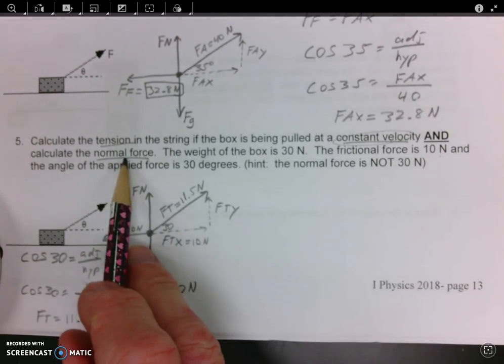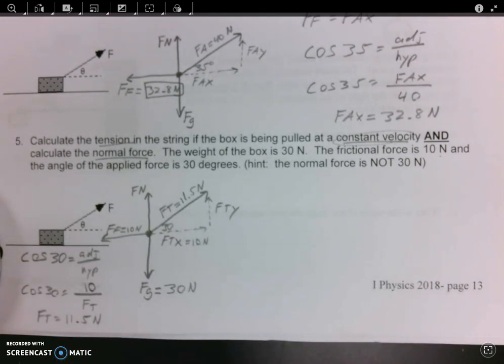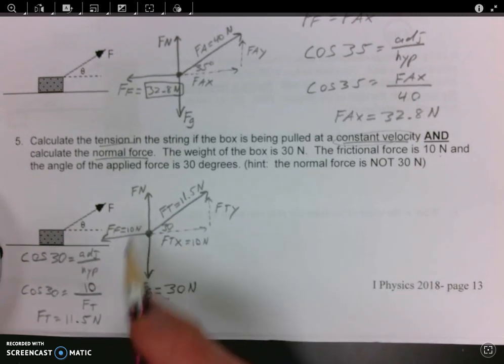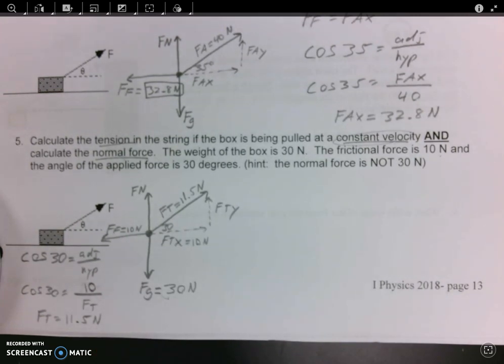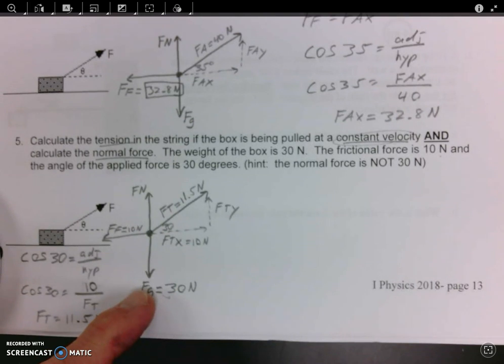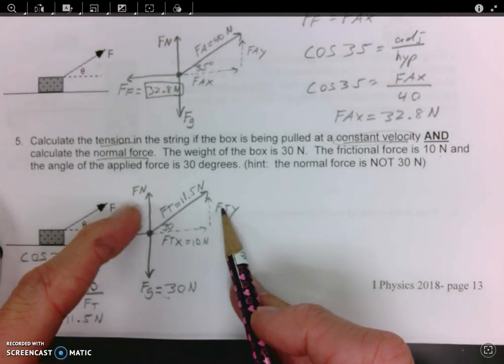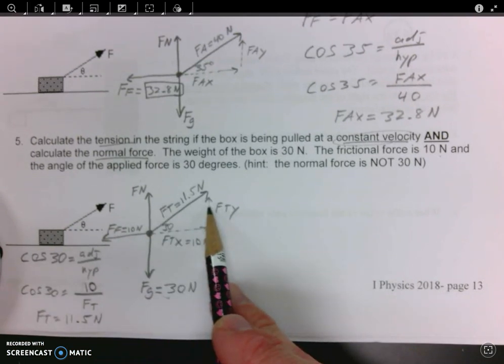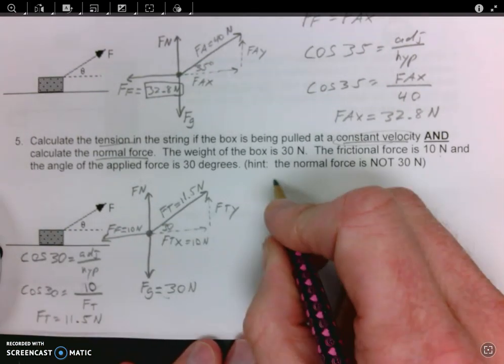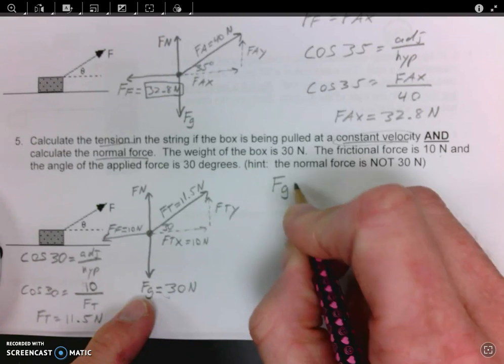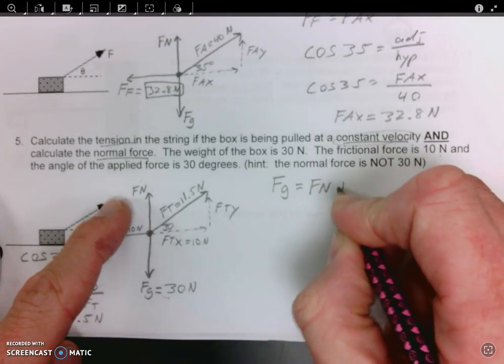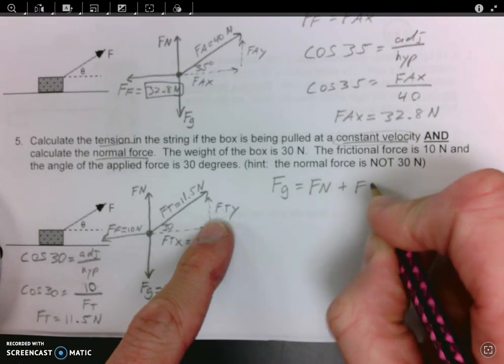What is the normal force? Now students will oftentimes say, oh look, we have 30 newtons going down, so we have 30 newtons going up. And they'll say that the normal force is 30 newtons. While it is true that we have 30 going down and 30 going up, we have two forces going up. So it's the sum of these two forces that will equal 30. So the force of gravity going down will be equal to the normal force plus Fty.